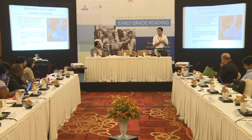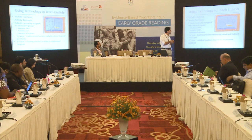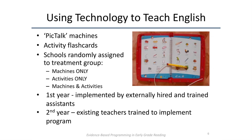The next study is interesting because it varied things along multiple dimensions. It looked at two different technologies for improving learning and two different methods of implementing those technologies — a nice two-by-two design. It was done in about 340 schools in Maharashtra aimed at improving children's English. The first technology was a pick-talk machine, similar to leap-frog devices — a glossy book in a plastic shell with a stylus that, when pointed at objects on the page, says the word aloud. The second technology was about 400 activity flashcards conveying the same information.